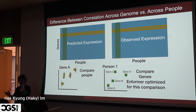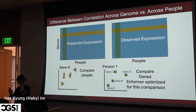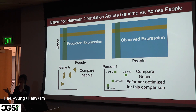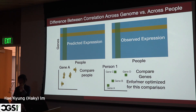Enformer was trained using the reference genome — no genetic variation — and it maximized correlation across the genome, not across individuals. So my question to you: if you're interested in running GWAS or TWAS, which would you be more interested in — correlation across people, or correlation across genes? [Audience answers: across people.] Correct. That's the one relevant for TWAS. I want to see whether gene A is more highly expressed among disease patients compared to controls.